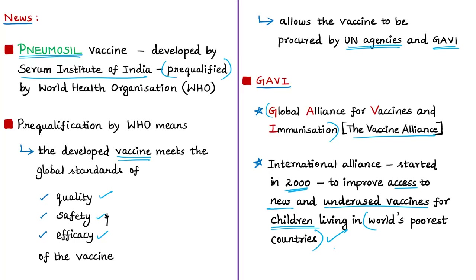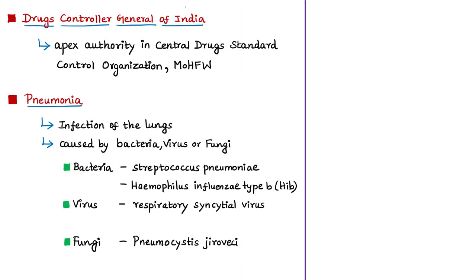In India, the company already has a license to manufacture and export this vaccine. However, for domestic use in vaccination programs in India, it must obtain a license from the Drugs Controller General of India — the apex authority in the Central Drugs Standards Control Organization (CDSCO), which comes under the Ministry of Health and Family Welfare. The speciality of this vaccine is that it is expected to significantly reduce the cost of pneumonia vaccination among children.